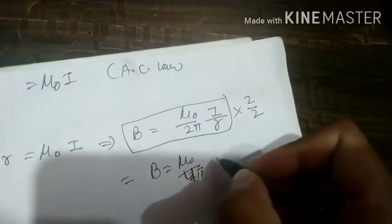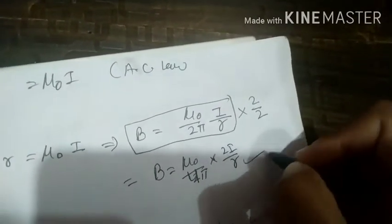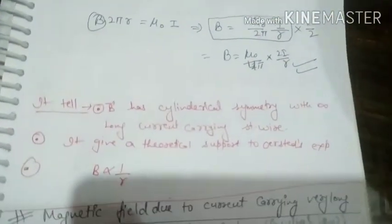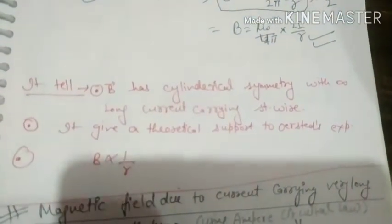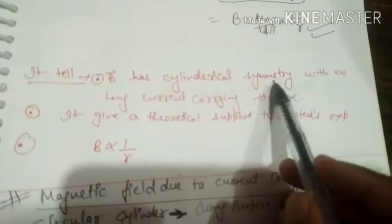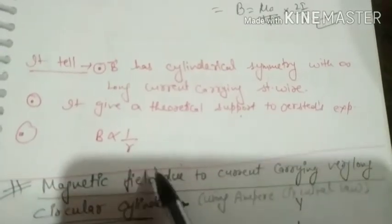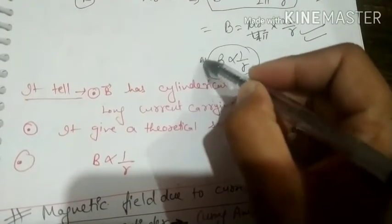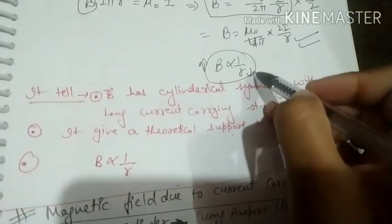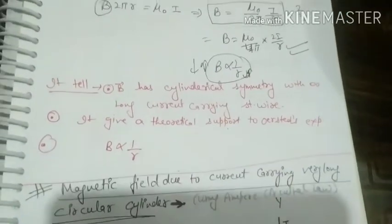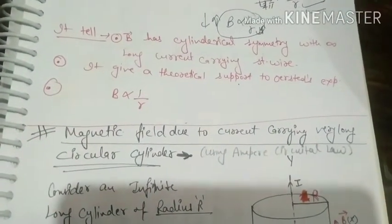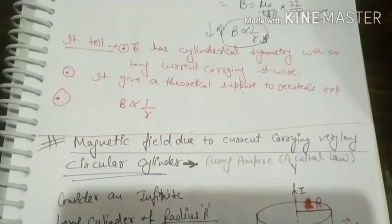This is the application of Ampere's circuit law. It has cylindrical symmetry with an infinite long wire, and the magnetic field is in a cylindrical shape. This theory supports the experiment. Here we can see that B is inversely proportional to r: if r increases, then B decreases. I hope you understand. In the next part, we will do magnetic field due to current-carrying long circular solenoid. Thank you.